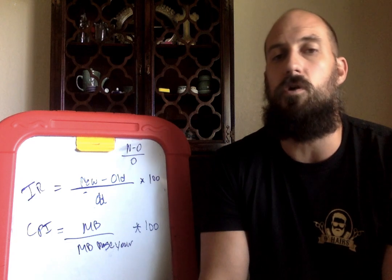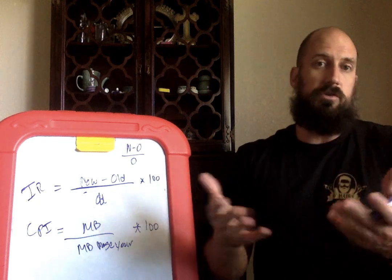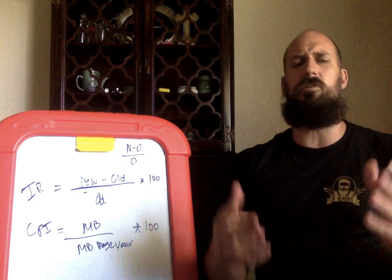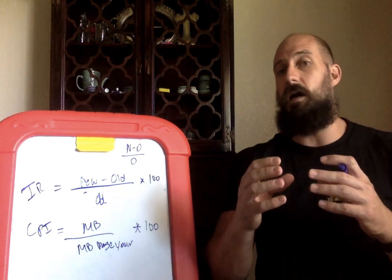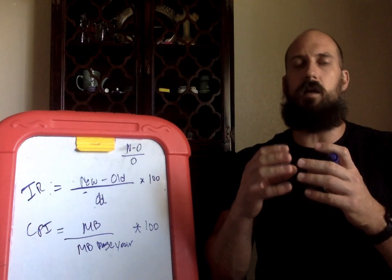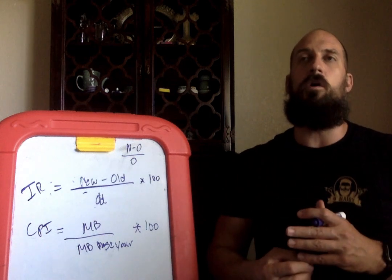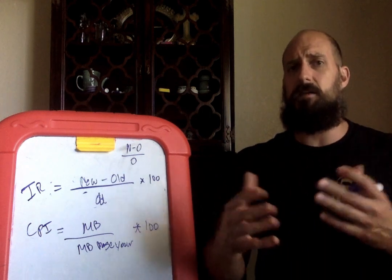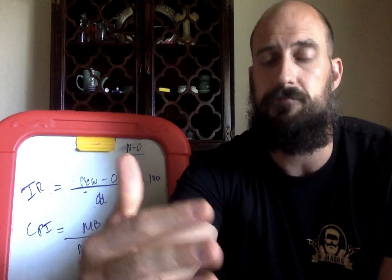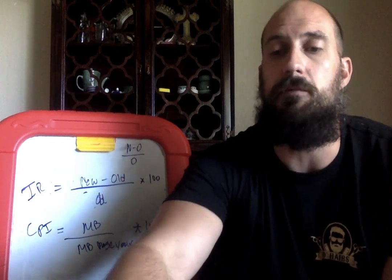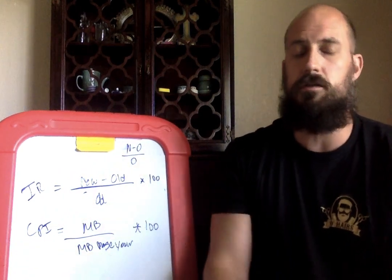Then there's product quality. CPI ignores both improvements and declines in product quality. For example, if iPhones were added to the market basket when they first came out, they've since gotten significantly more expensive but also significantly better. CPI doesn't account for that. So the three limitations we don't see in CPI are: substitution bias, new products, and product quality.